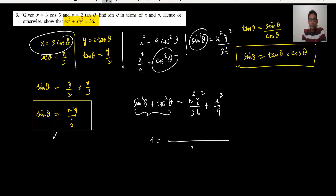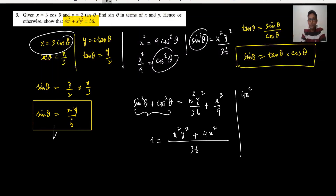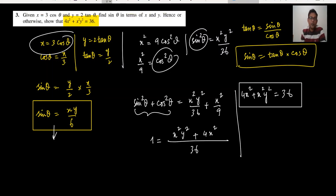The LCM is 36, so multiplying through: x squared y squared plus 4x squared equals 36. Shifting 36 to the right-hand side, we get 4x squared plus x squared y squared equals 36, and we have done this. Normally we have to use the sine squared plus cos squared equals 1 formula — and we have done question number 3.